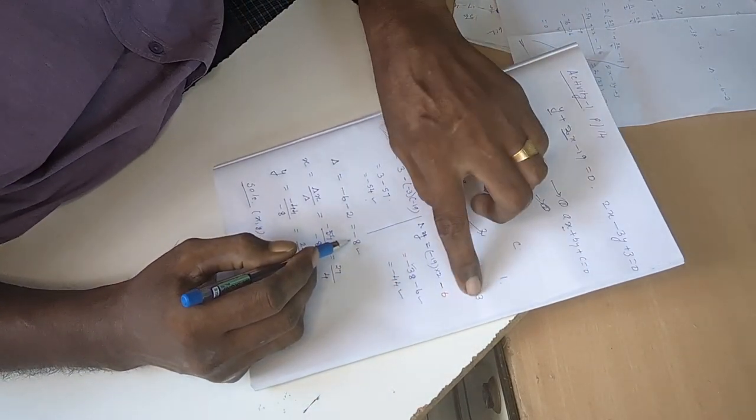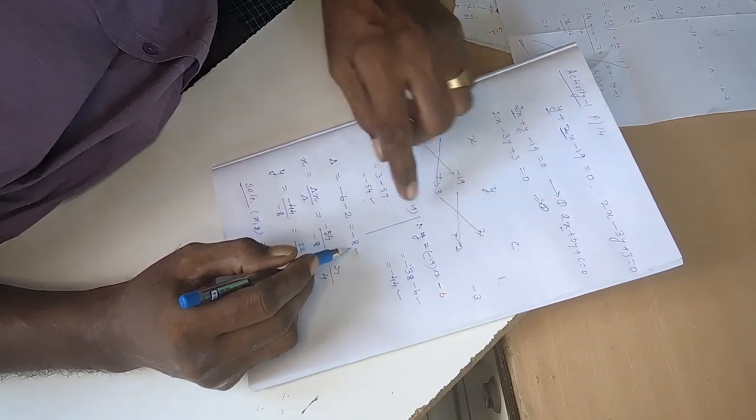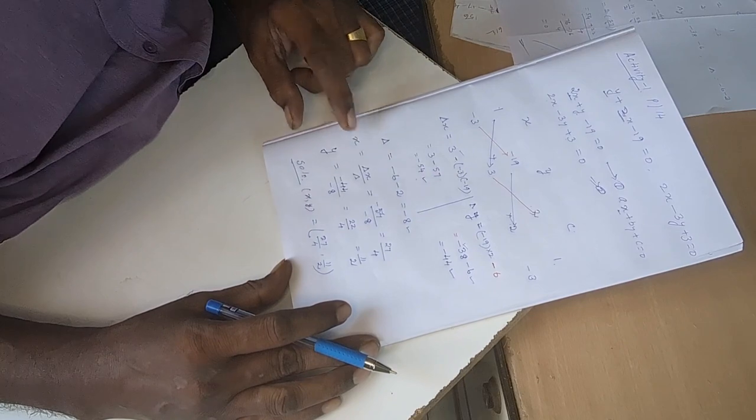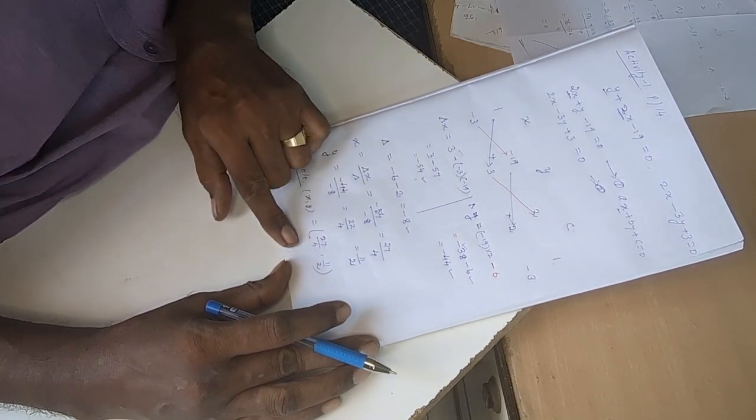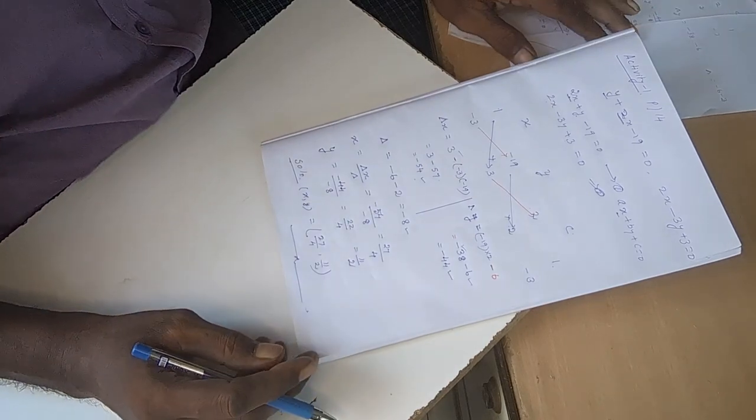And delta value: 2 into minus 3 is minus 6, 1 into 2 with minus gives minus 8. So x value and y value is the solution. Thank you for watching this video.